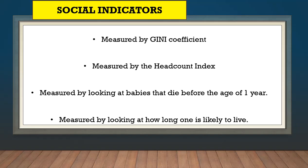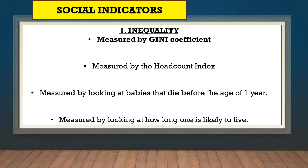Now, the social indicators are indicators that look at the well-being of the people. The first social indicator is inequality. Inequality is measured by the Gini coefficient. If the Gini coefficient is between zero and one, the closer it is to one, the higher the inequality.